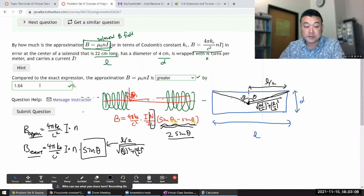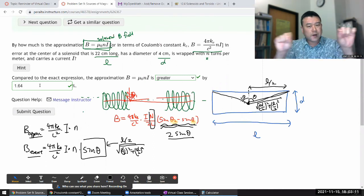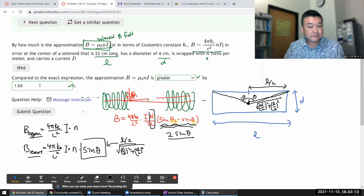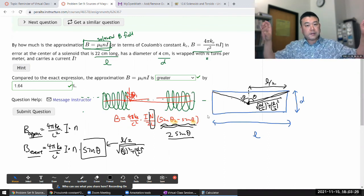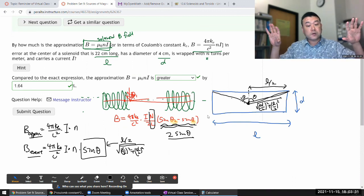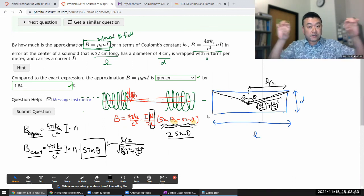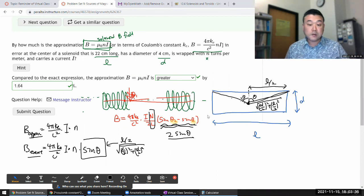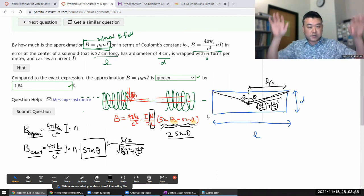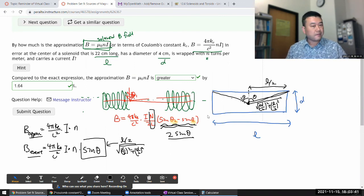It'll get worse as you go out, but it's not that bad of an approximation. What it really is, is that the other loops that are supposed to be out there for the infinite version are so far away they don't contribute much magnetic field. Whether you do the calculation including them or excluding them, they don't end up adding much because they're already so far away.